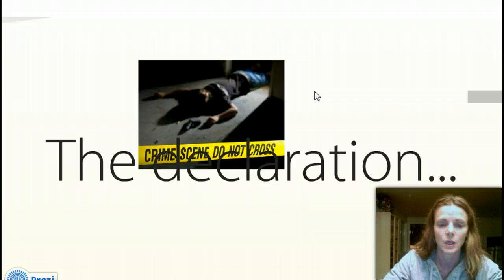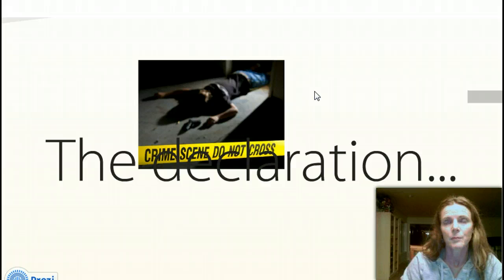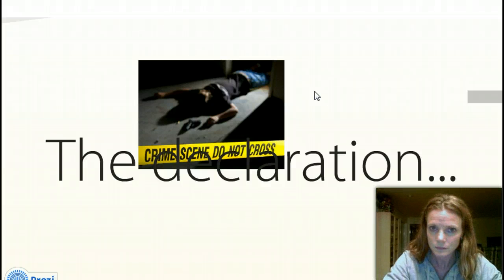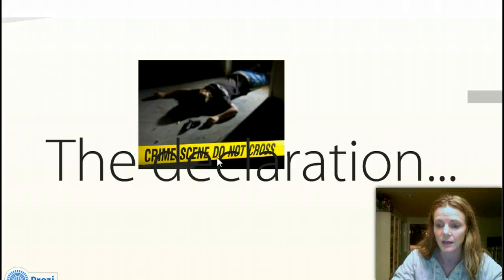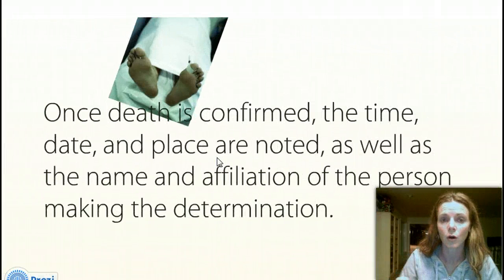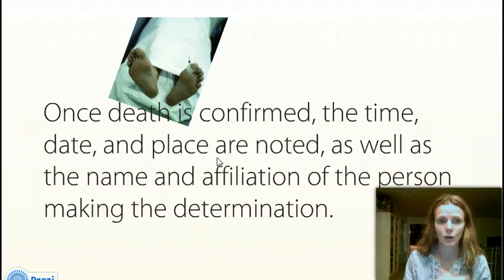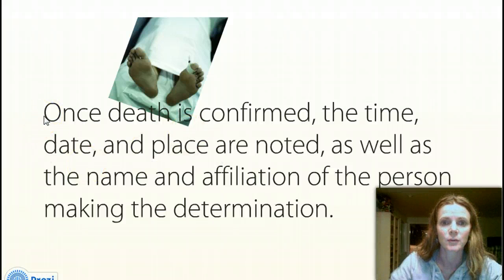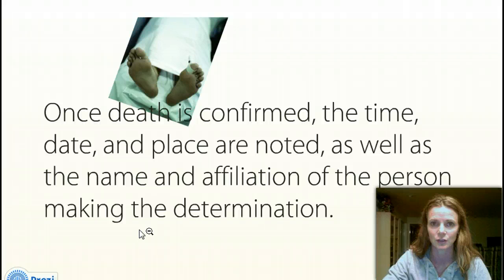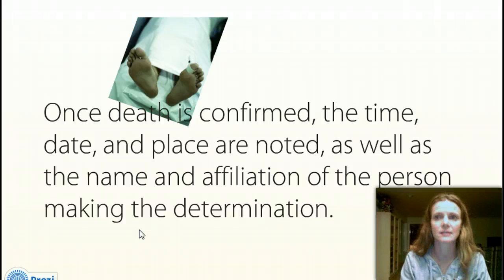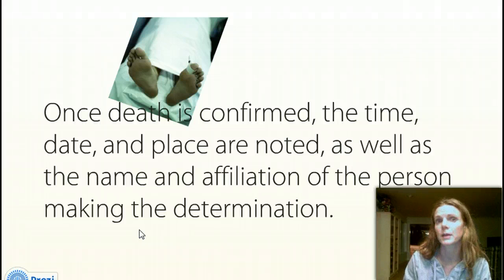There's a process after death that can help people determine the time of death, because if someone wasn't exactly there at that moment, you have to figure those things out. So the declaration: say someone arrives on scene — paramedics, fire department, police — they can determine that someone's dead, check for pulse and stuff like that, but they can't necessarily declare death. Once death is confirmed, the time, date, and place are noted, as well as the name and affiliation of the person making that determination.